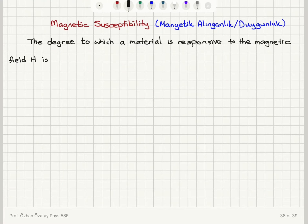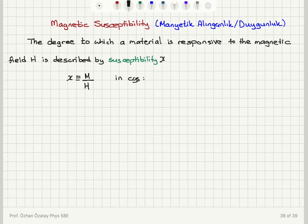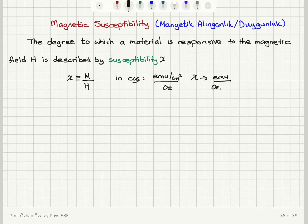This is described by susceptibility. Chi is defined as the magnetization caused by the magnetic field divided by the magnetic field. In CGS units, magnetization is in EMU per centimeter cubed, and H is in Oersteds, so the unit of susceptibility will be EMU per Oersted centimeter cubed.